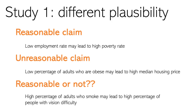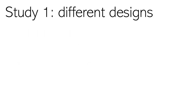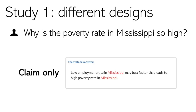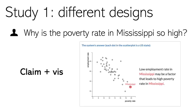For Study 1, we also wanted to mimic typical question-answering systems that tend to be unreliable in answering why questions. So some causal claims were reasonable, some were unreasonable, and some were difficult to judge whether they were reasonable or not. To learn what kinds of design led to the most useless interpretation, we presented the answers with different designs. In the first design, there is only a causal claim. The second design presents a scatter plot as visual evidence about correlation.